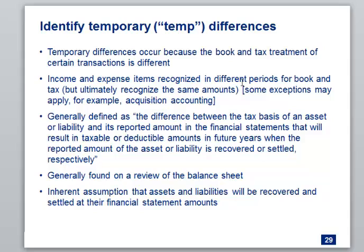Temporary differences: book and tax timing is different — things happen in different periods. The key for temporary differences is to think of it as a balance sheet concept. If you have an asset or a liability where the book basis is one number and the tax basis is another number, you have a temporary difference. Using the bad debt reserve example: a company sells something for $100 — tax picks up $100 of income, the basis in that receivable for book and tax is both $100, so at that point your basis is the same.